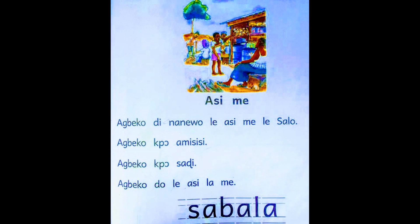The title reads: 'Asime in the Market'. Agbeko looked for some things in the market at Salo. Agbeko saw body cream — misi. Agbeko saw sadi. Agbeko went out from the market.